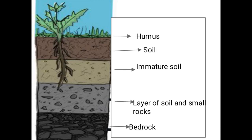So the first layer is humus, the second layer is soil. The proportion of stones and rocks increases as we go deeper. The bottom layer is called bedrock.